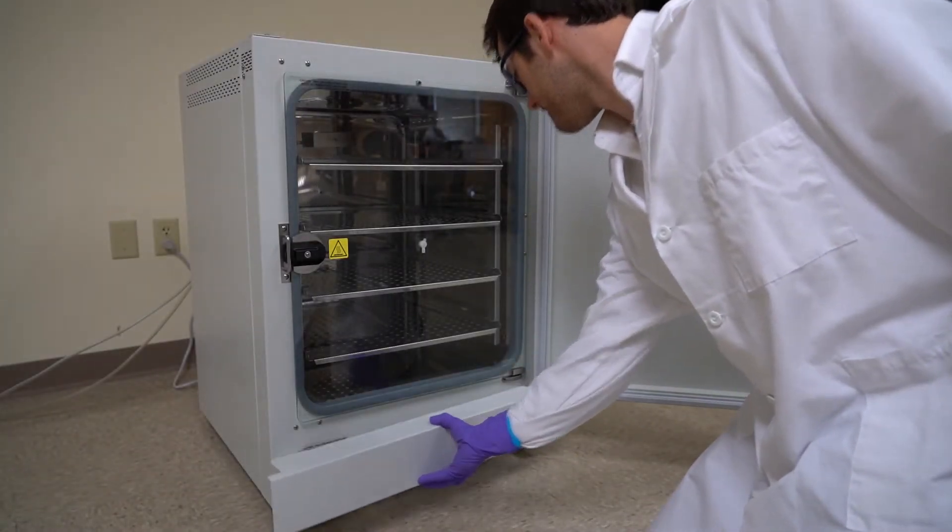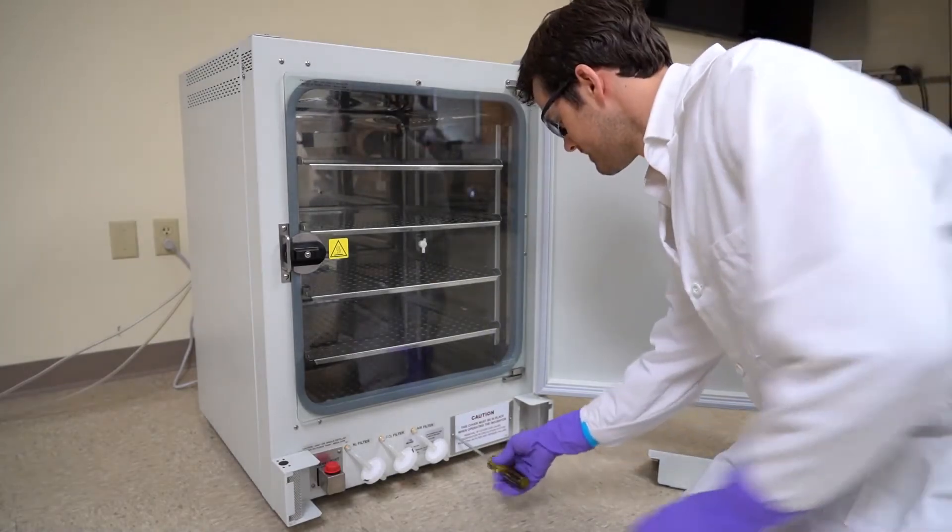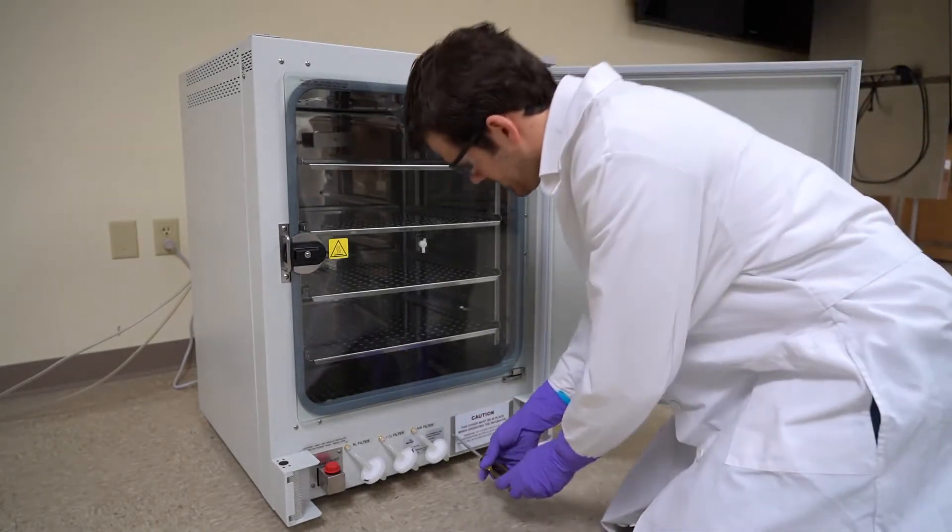Open the doors and remove the valance to access the sensor bay cover. Remove the screws securing the sensor bay cover.